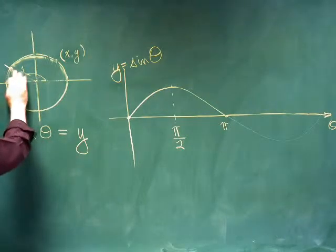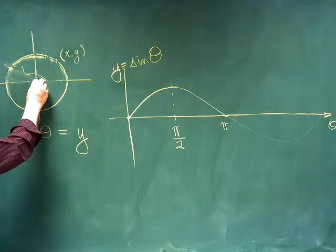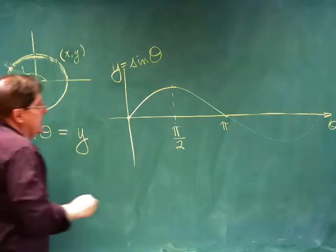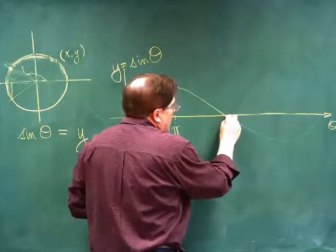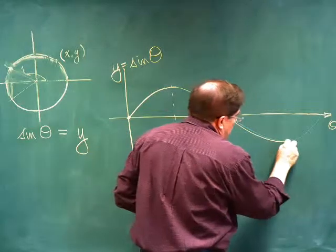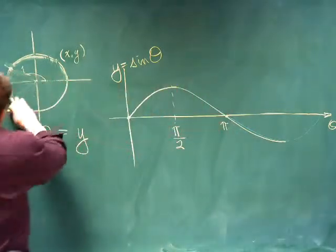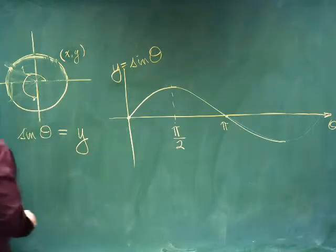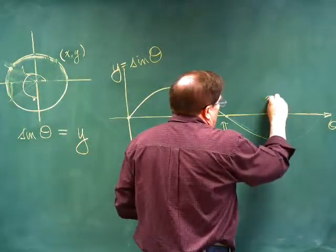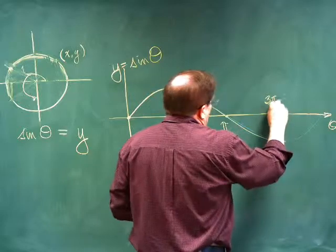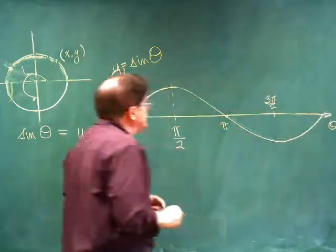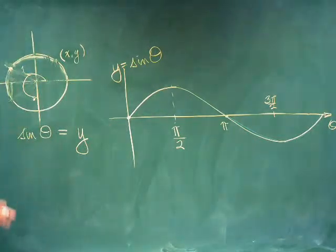As we move down into the third quadrant, the y value is now negative here. So, from pi, it starts getting negative until it gets down to negative 1, and that occurs when we're right here. And that value is at 3 pi over 2, and then finally going back until it's back to zero again, and that is one cycle.